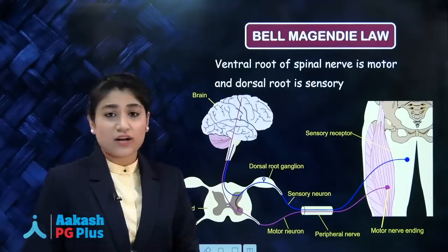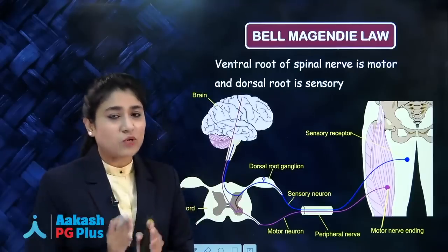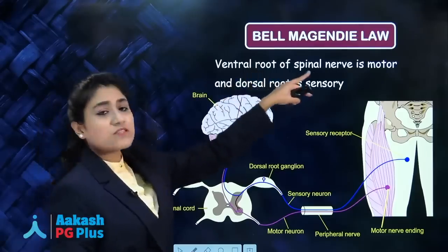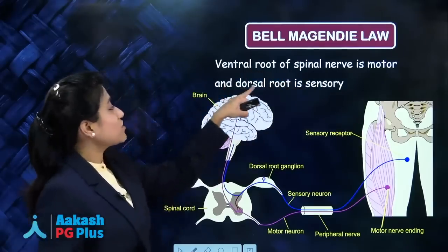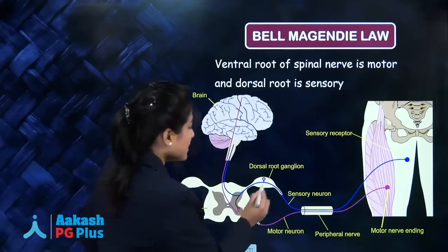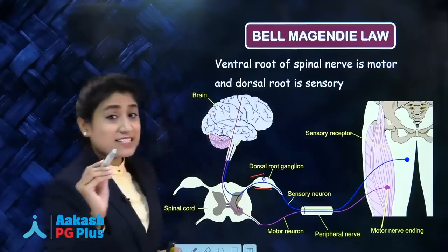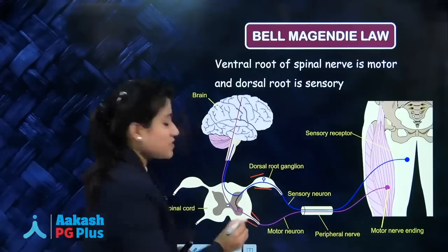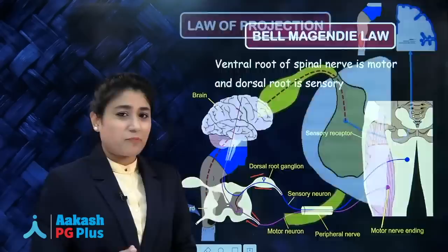Next is Bell-Magendie law. It's a very simple law. What does it say? It says that the ventral root of the spinal nerve is motor and the dorsal root is sensory. Here you can see the dorsal root which is sensory and the ventral root which is motor. That's it — this is Bell-Magendie law.